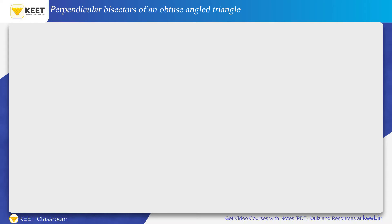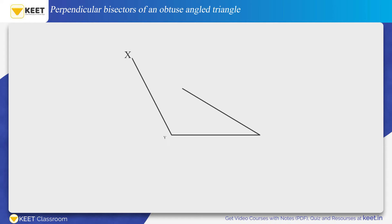To draw the perpendicular bisectors of an obtuse angle triangle, draw the obtuse angle triangle as per the information given in the problem. Let triangle XYZ on the screen be the obtuse angle triangle, in which angle Y is the obtuse angle.